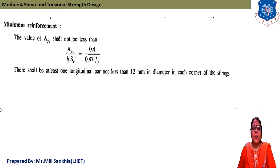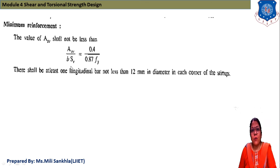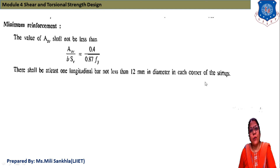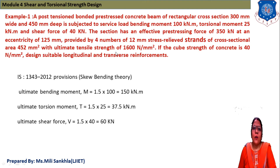For minimum reinforcement, the value of ASV shall not be less than ASV / (B × SV) = 0.4 / (0.87 × FY). There shall be at least one longitudinal bar not less than 12 mm in diameter in each corner of the stirrups. We cannot provide bars less than 12 mm diameter per codal provisions.